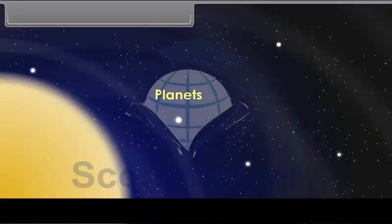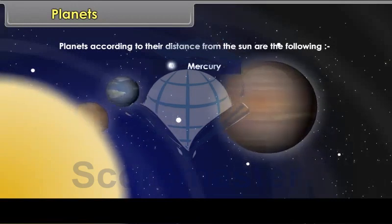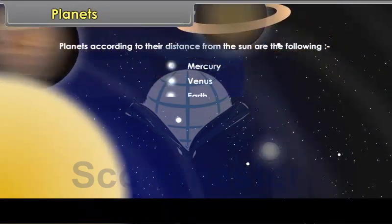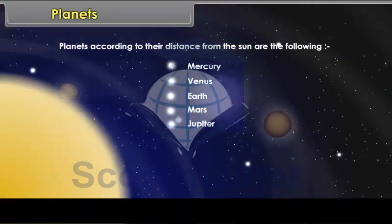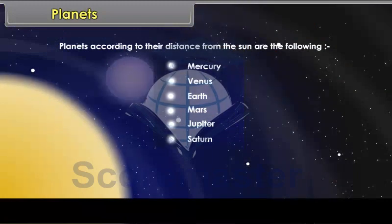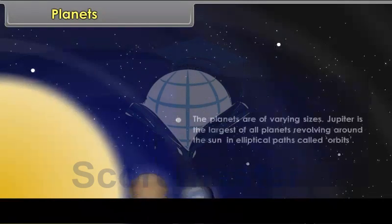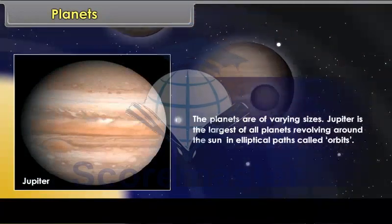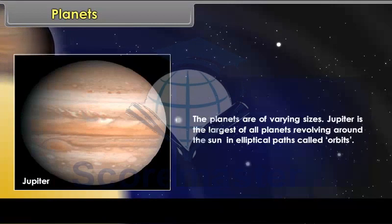Planets. Planets according to their distance from the Sun are Mercury, Venus, Earth, Mars, Jupiter, Saturn, Uranus, and Neptune. The planets are of varying sizes. Jupiter is the largest of all planets revolving around the Sun in elliptical paths called orbits.